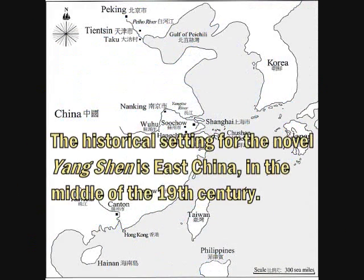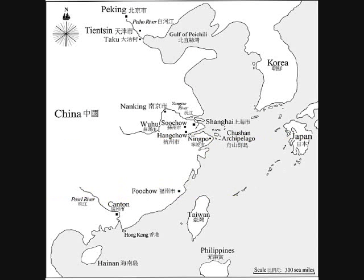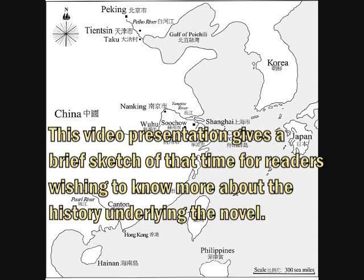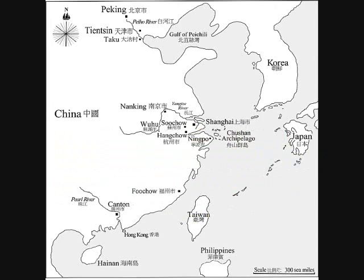The historical setting for the novel Yangshan is East China in the middle of the 19th century. This video presentation gives a brief sketch of that time for readers wishing to know more about the history underlying the novel.